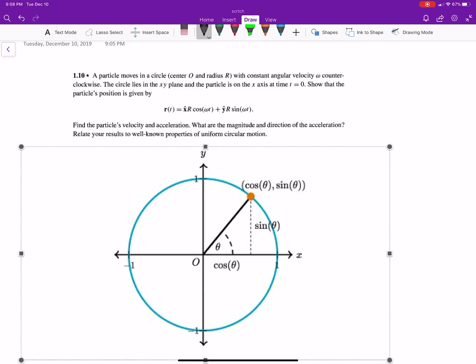Okay, so we're going to look a little bit at uniform circular motion here with problem number 10. It says a particle moves in a circle centered O with a radius r with constant angular velocity omega, which is that Greek symbol counterclockwise. The circle lies in the xy plane and the particle is on the x-axis at time equals zero.